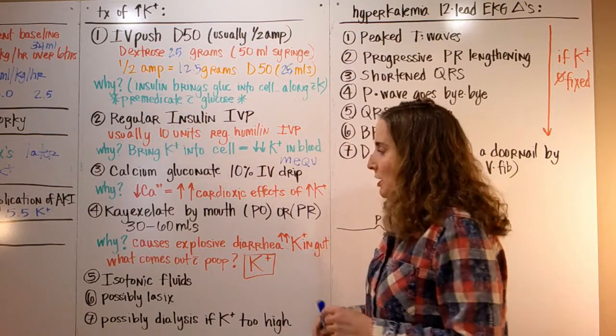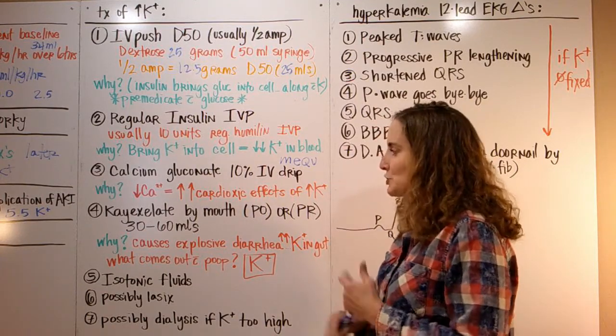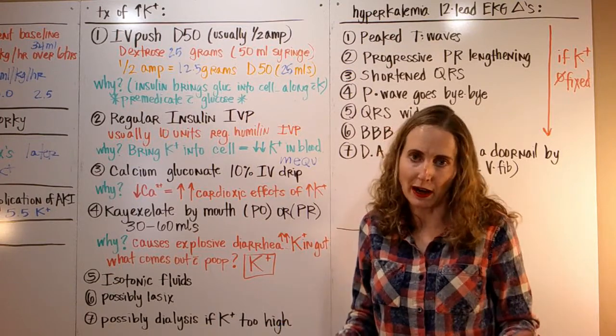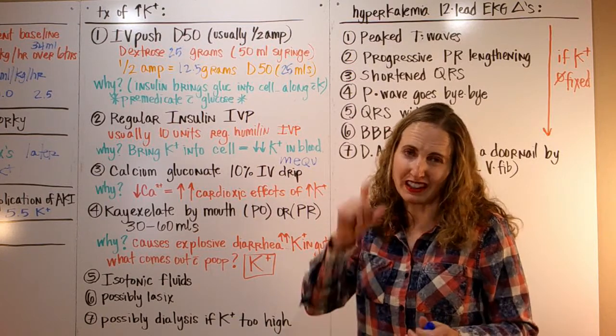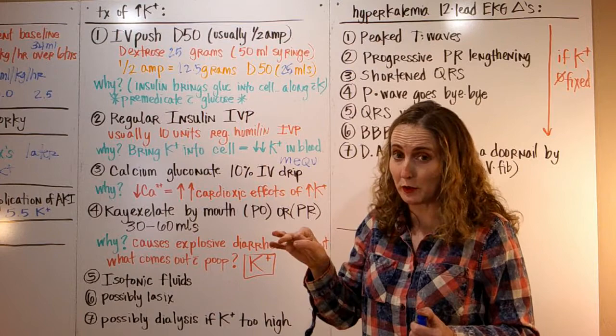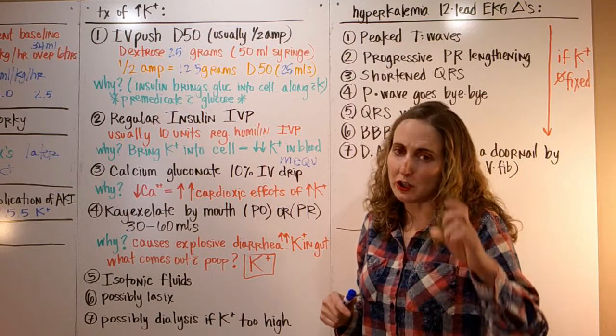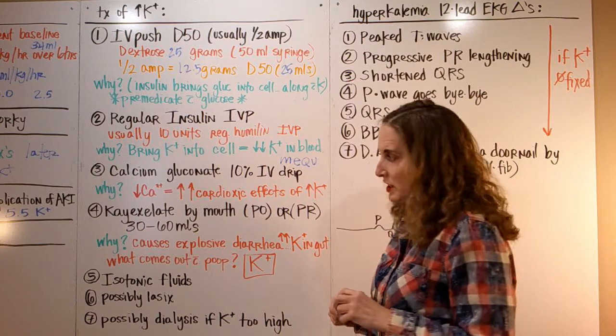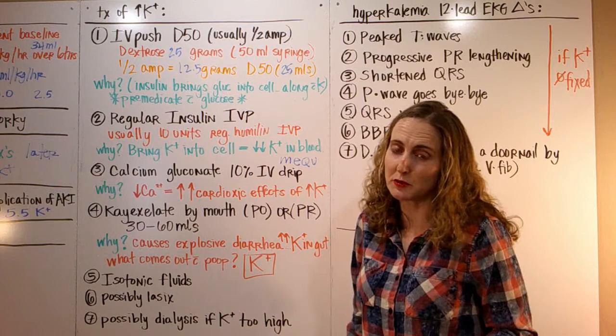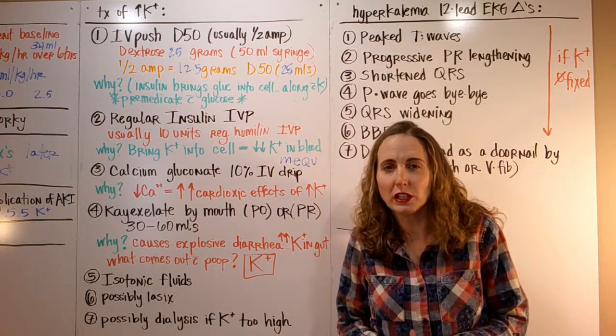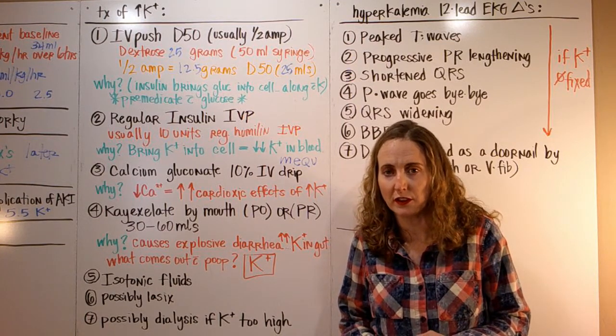Kayexalate is going to lower potassium, but get ready because it's usually 30 to 60 milliliters or measured in grams. You can give it by mouth or you can give it up the butt, but if you're going to give it up the butt, you need the cath-tip syringe. You can't use a luer lock syringe because that only goes in the IV. You've got to use the big long cath-tip syringe so you can stick it up the rear end.